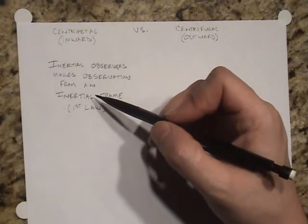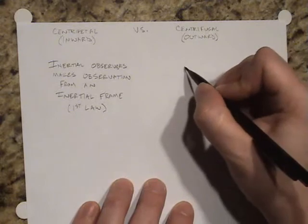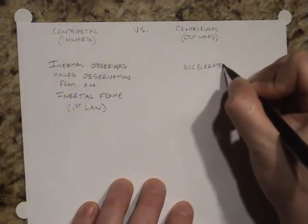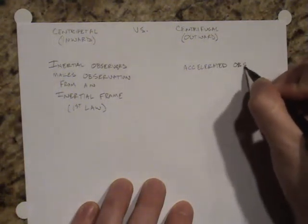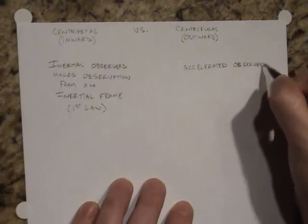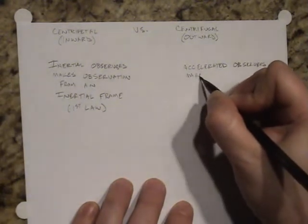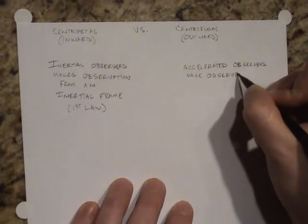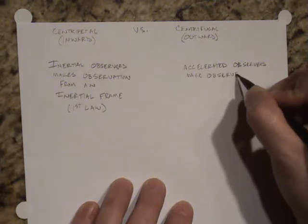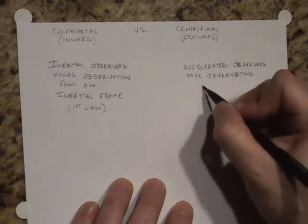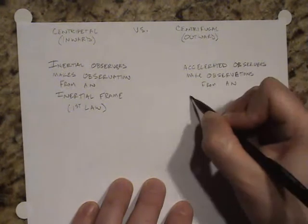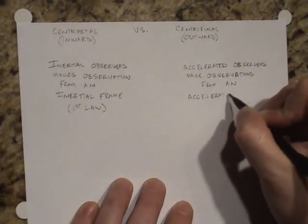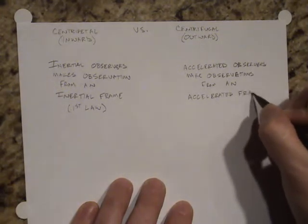Now, if they're not traveling with a constant velocity, or they're not at rest, then they are what we would call accelerated. And accelerated observers make their observations, as I'm sure you can anticipate, from an accelerated frame of reference.